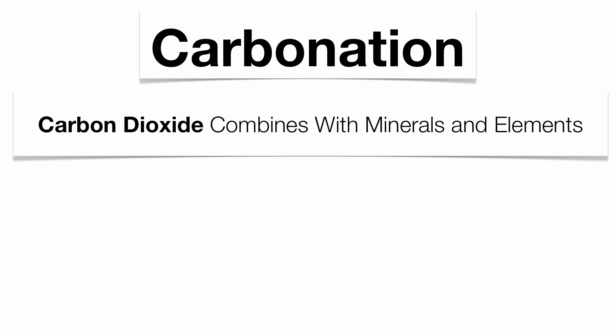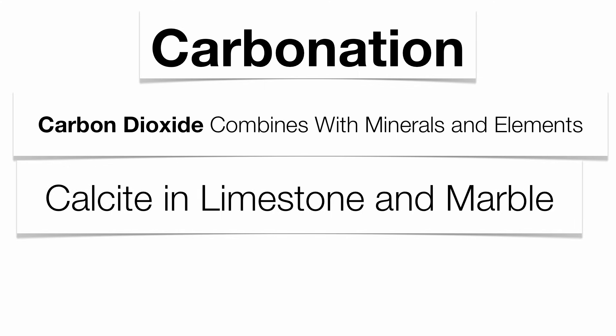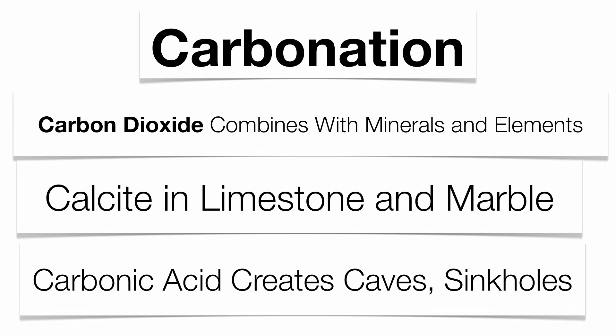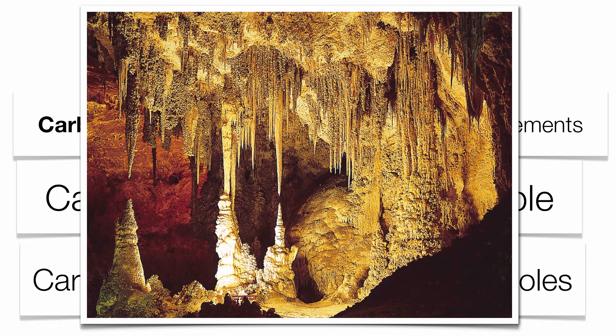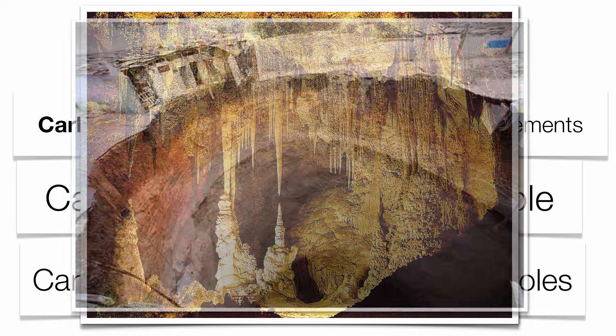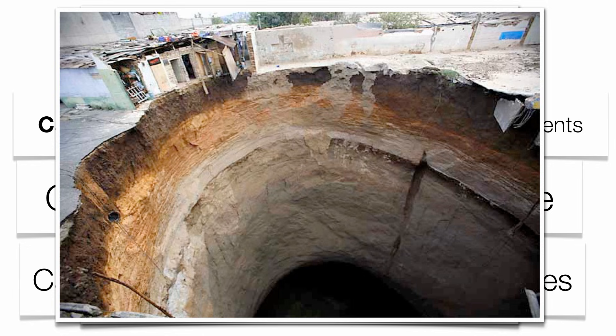The next type is what we call carbonation. This is where carbon dioxide combines with the minerals and elements in the rock and attacks it. Specifically, there's a mineral called calcite that gets attacked. The carbon dioxide dissolves into water and creates a very weak acid called carbonic acid that attacks the calcite in limestone and marble. Given enough time, that rock gets eaten away and creates features underground called caves or sinkholes. The rock just can't support the overlying soil layer, and the soil caves in upon itself.